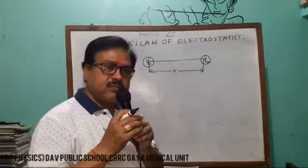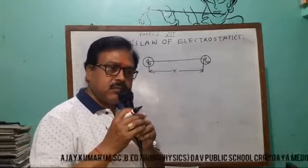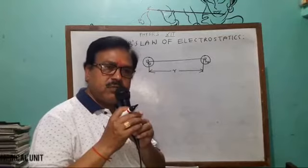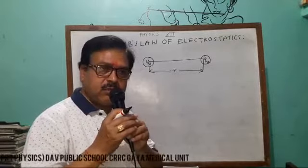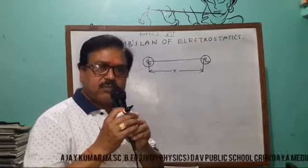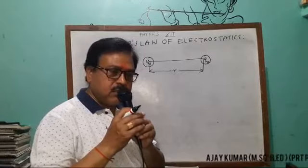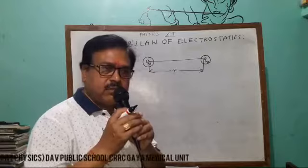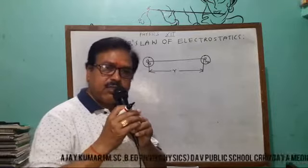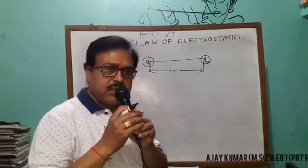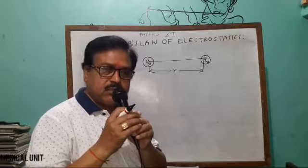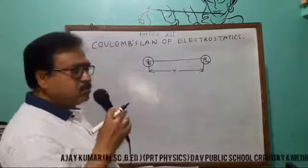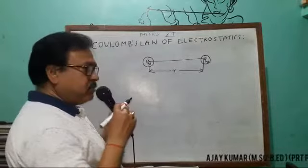Whether attraction or repulsion depends upon the nature of the point charges. If Q1 is positive and Q2 is positive, there must be a repulsive force acting between the two point charges. If Q1 is positive and Q2 is negative, then for two opposite kinds of charges, there must be attraction between the two point charges separated by the same distance. Now let us see how to state Coulomb's law.